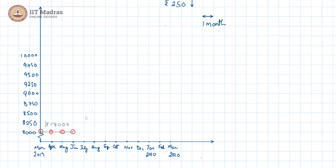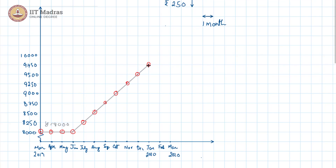This line is y = 8000. Beyond that, the price had been increasing by 250 every month. So in July we will be here, August here, September here, October, November, December, and January. This segment can be indicated by a line, and in order to find the equation of this line we use the two-point form. We first identify two points on this line segment.